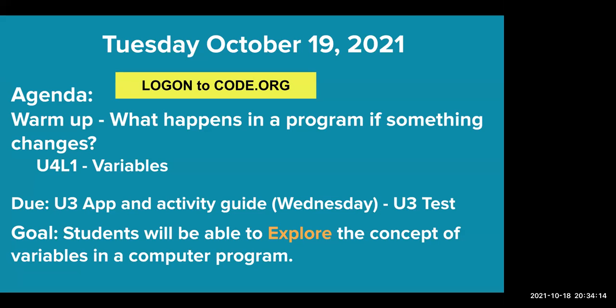So what happens in a program if something changes? Ideally, you need something that's going to be changeable. There needs to be some element that you can put something that's a different value and have it be maintained. That is what we will be talking about, variables.